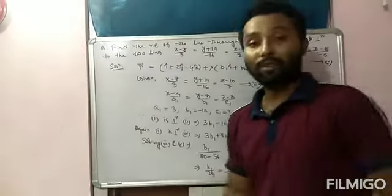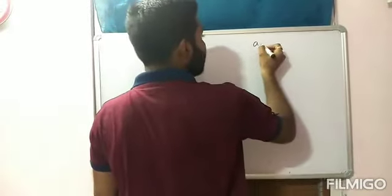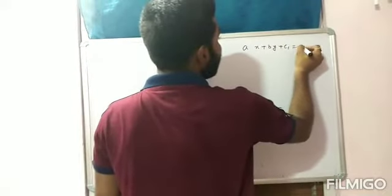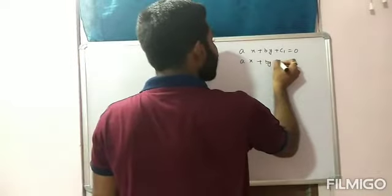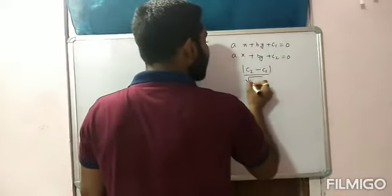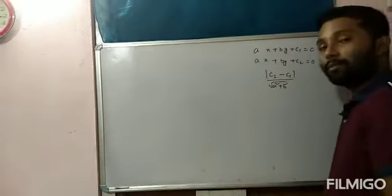In this way you have to solve these questions. Two model questions have been discussed. We know the distance between two parallel lines from Class 11 straight lines. The formula was: for lines AX + BY + C₁ = 0 and AX + BY + C₂ = 0, the distance is |C₂ − C₁| / √(A² + B²). We can use the same formula for planes.